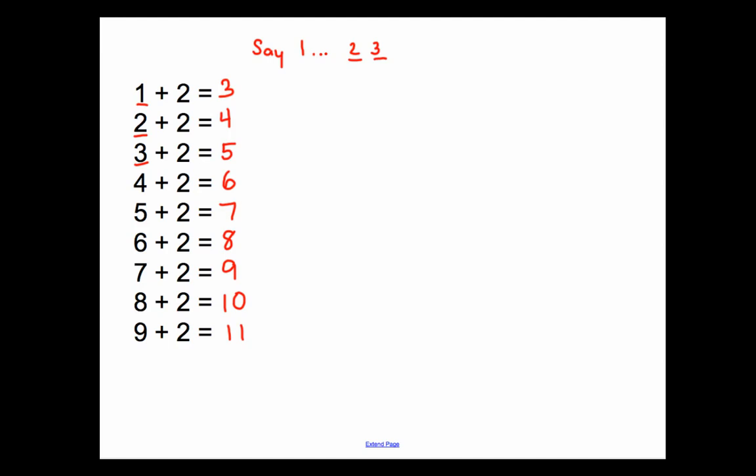And you can try the same thing with counting on by 3. So you can add 3 to any number by counting on from that number for 3 numbers. So for example here, you would start at 1 and then you would count on three more numbers: 2, 3, 4. And that would be your answer. 1 plus 3 equals 4.